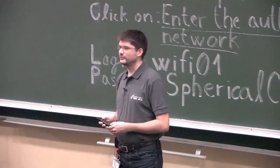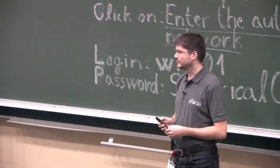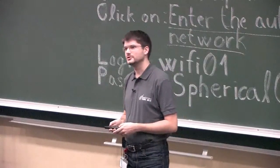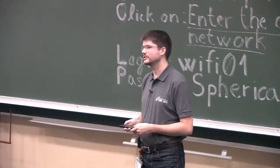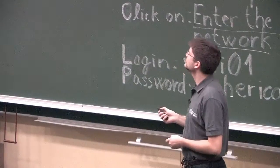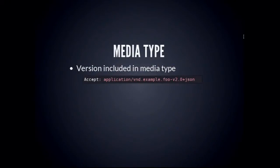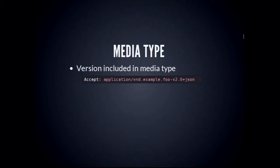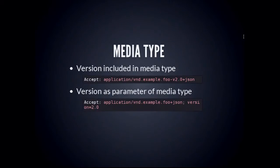You can also use media types for versioning — embedding the version directly into a custom vendor media type, for example including V2.0 in the media type string. This approach lets the URLs remain the same across versions; you simply think of a new version as another representation of the resource. You can also use media type parameters, which is arguably clearer.